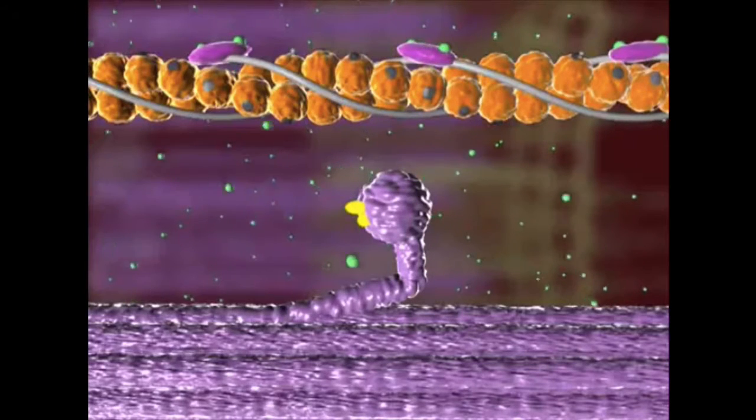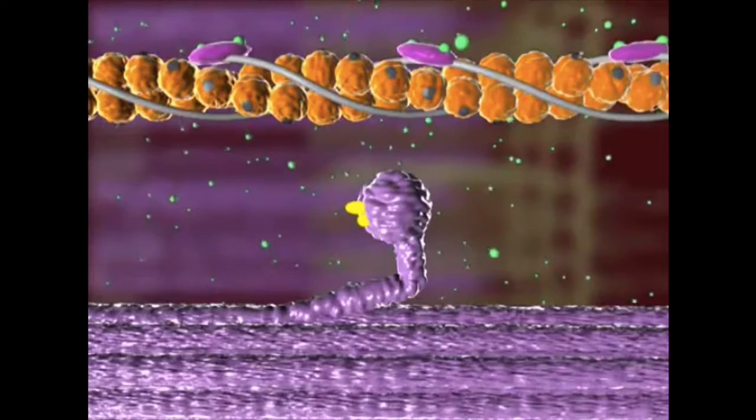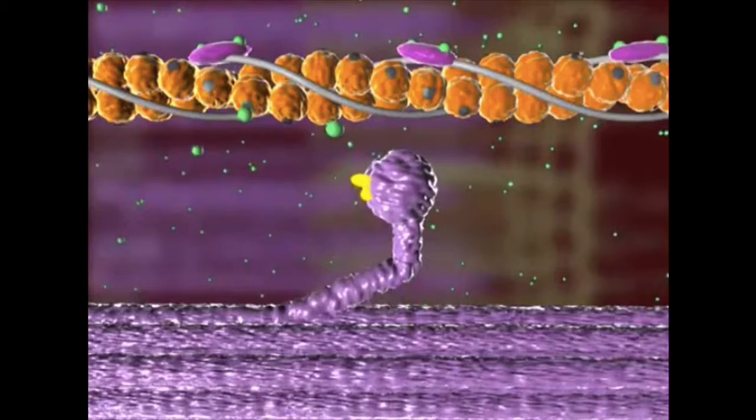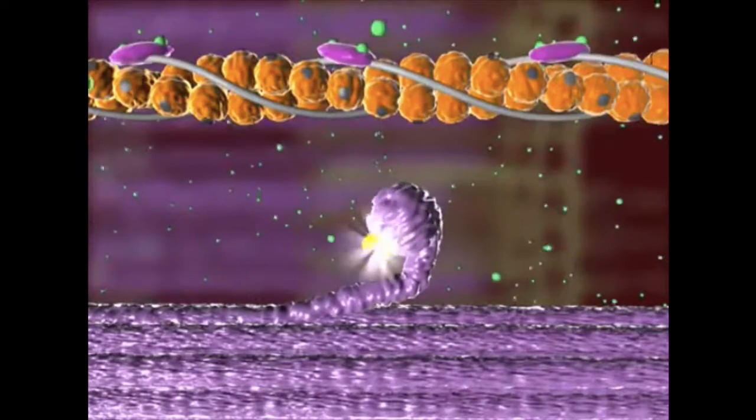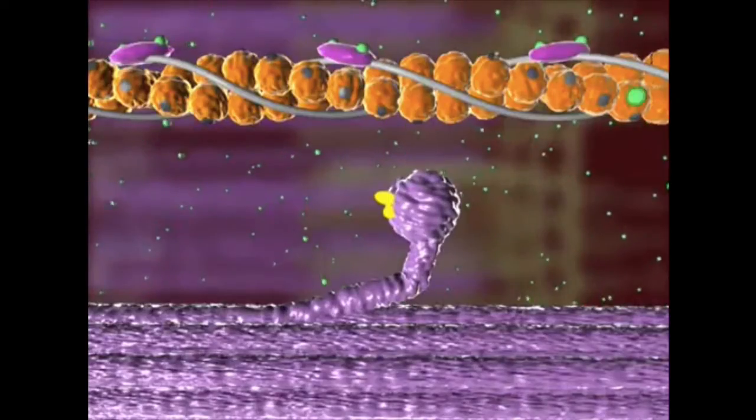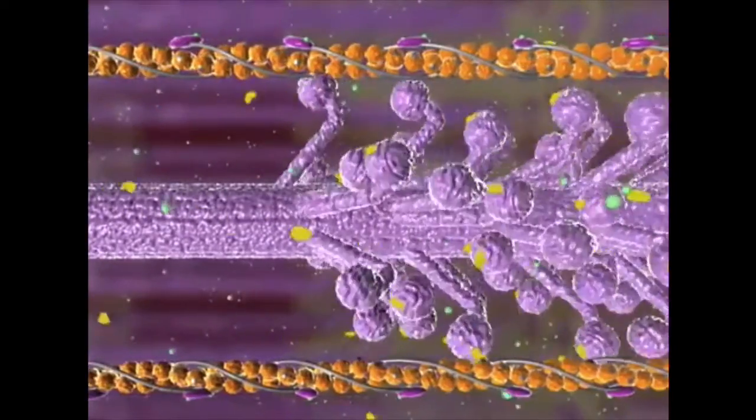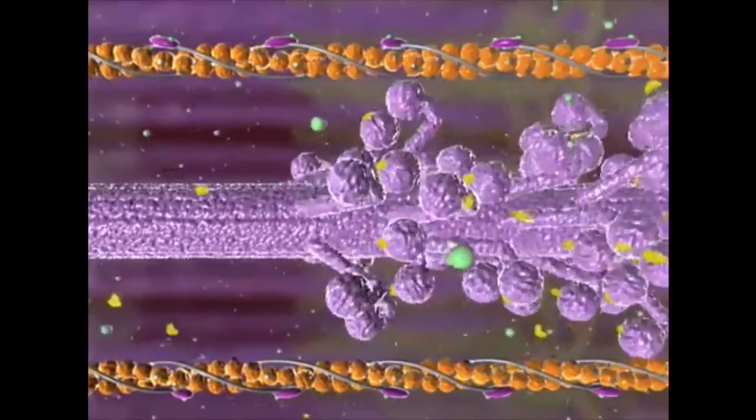The sequence repeats as long as calcium ions are present. Bind, power stroke, detach, extend. The combined work of many myosin heads causes the actin filaments to slide past the myosin filaments.